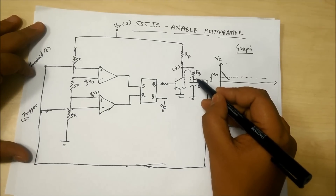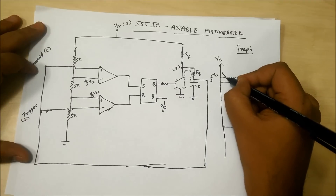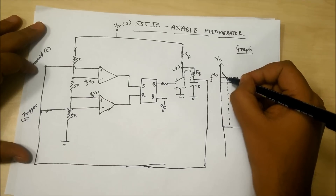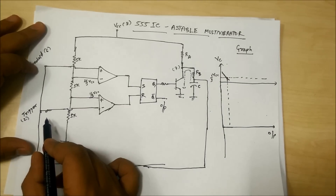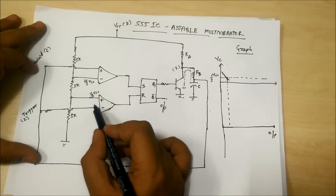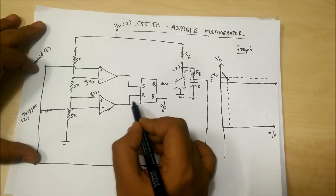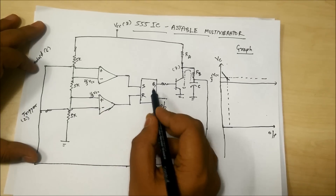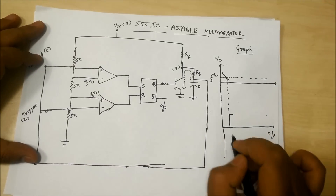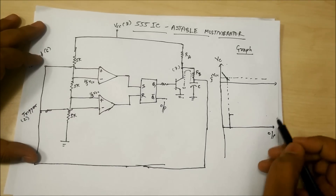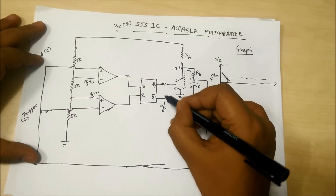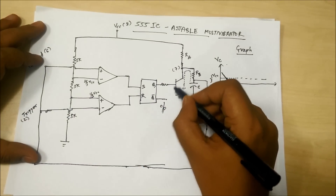When the flip flop is reset, Q becomes low and Q-bar becomes high — the output goes high. This happens at the point when the capacitor discharges to 1/3 VCC. The lower comparator becomes dominant, 1/3 VCC at the non-inverting terminal is more than the inverting terminal, the flip flop is reset, Q becomes low, Q-bar becomes high, and output goes high. Now since Q is low, the transistor is shut down.